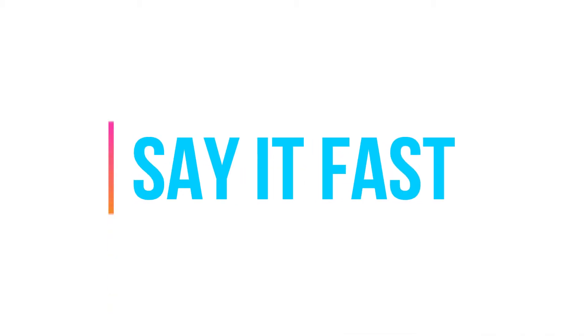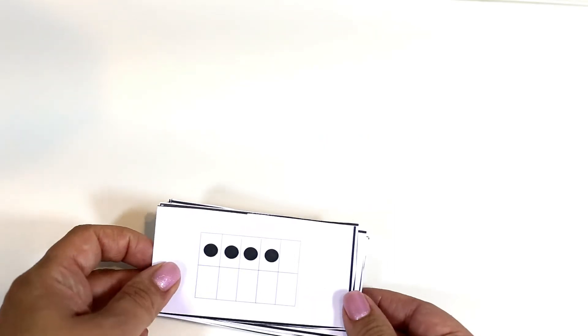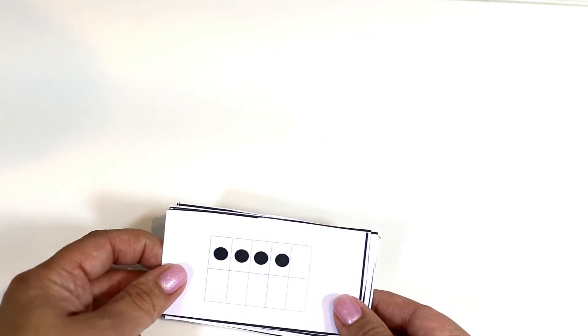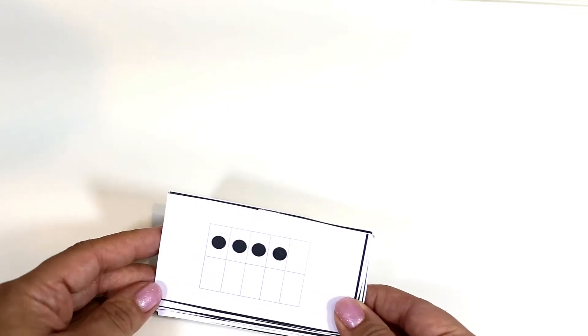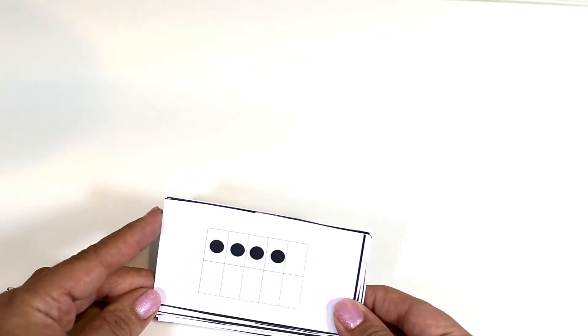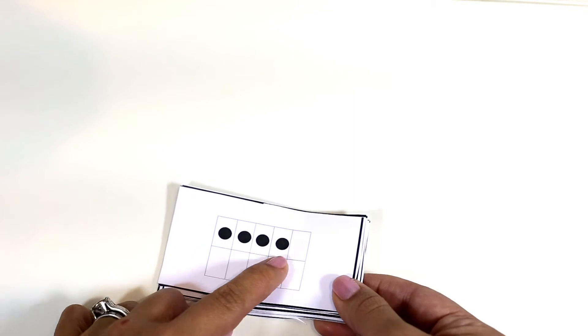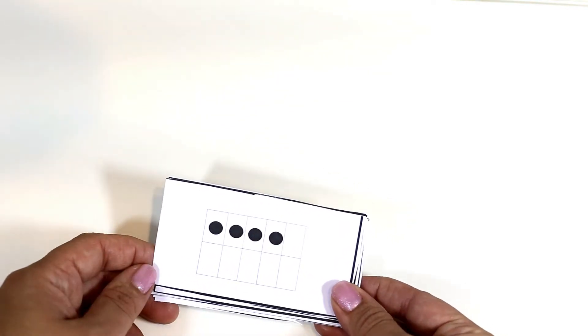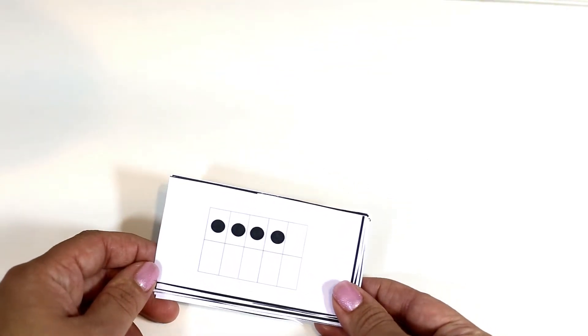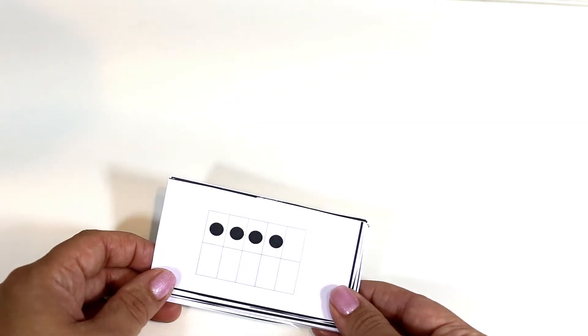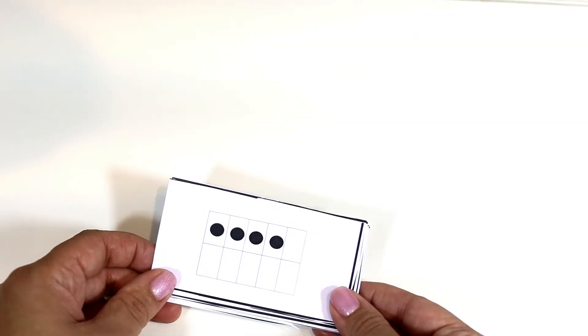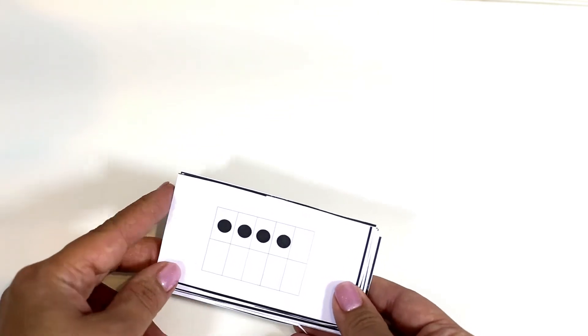So the last activity I have is called say it fast and this activity has the child really gain their subitizing skills. So the purpose of the game is to say the number of counters as fast as possible. They have to identify the number that I am showing them as fast as possible. So they can play this with a partner or they can play this on their own using a timer.